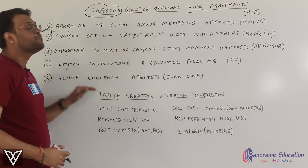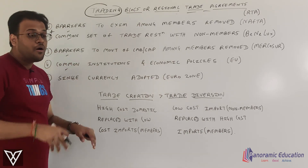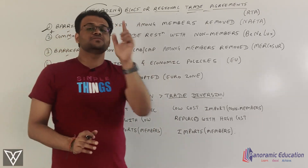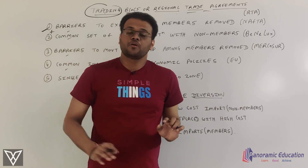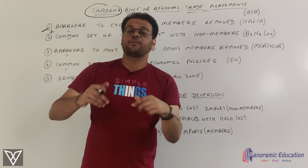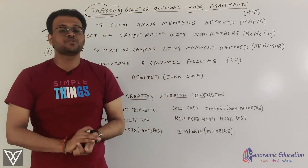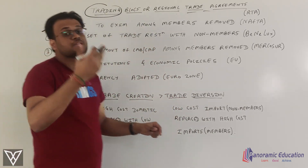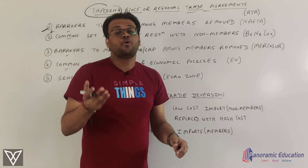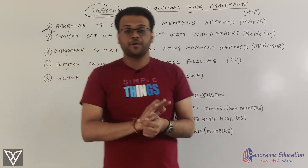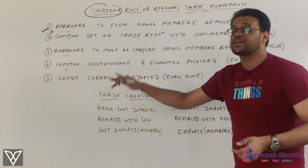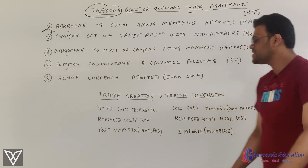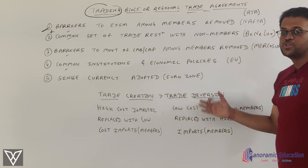When you go to the next level, you use a common currency — a single currency. That is when you move to a monetary union, where there is only one currency. The best example is the Eurozone.